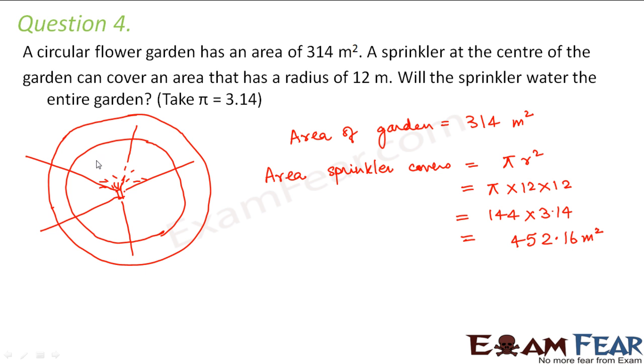The water from the sprinkler can actually reach even outside the garden. So the question is, will the sprinkler water the entire garden? Yes, of course it will water the entire garden, because its water is capable of reaching even beyond the garden. Obviously it will be able to sprinkle the entire garden.